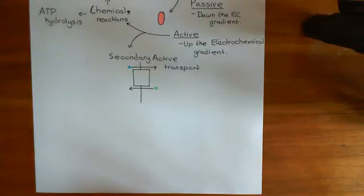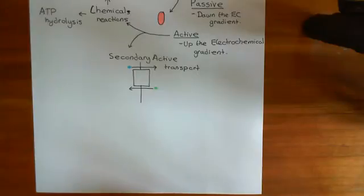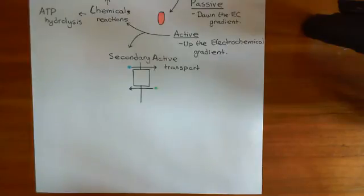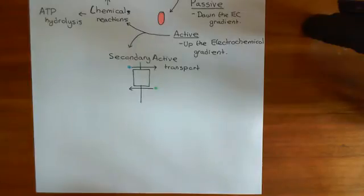Welcome back to this next video in which we are discussing ATP binding cassette transporters, or ABC transporters. We've talked about the basic principles of the difference between a transporter and a channel. We've also discussed the different types of transporters — passive transporters, and then the two types of active transporter: primary active transporters and secondary active transporters.